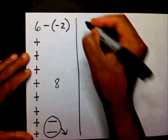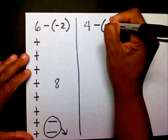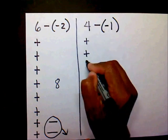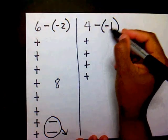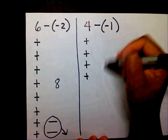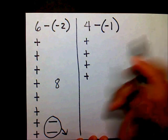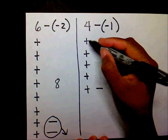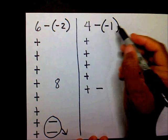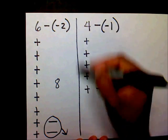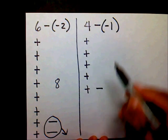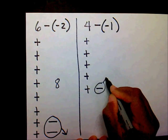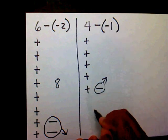Try another one. I have four positives and I want to take away one negative. But I don't have one negative to take away, so I need to add a zero. I have four minus negative one — I just added the zero, so I still have four here. Can I take away a negative one now? Yes I can, and I'm left with five. That's my answer.